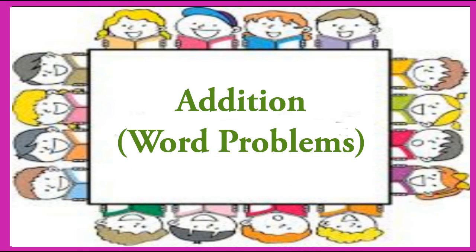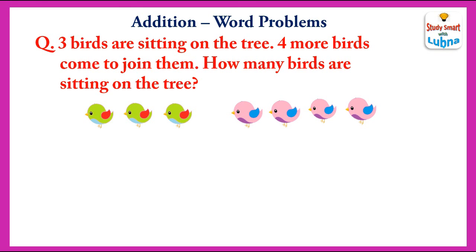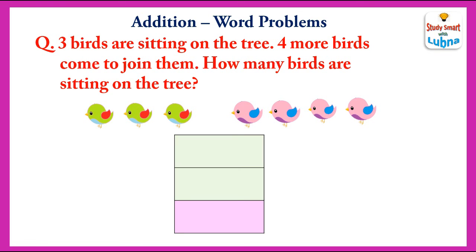Welcome students. Today we are going to do some addition word problems. Problem number one: three birds are sitting on the tree, four more birds come to join them. How many birds are sitting on the tree? In this problem you have to find the total number of birds. First there were three birds sitting on the tree, then four more birds come to join them. We will add three plus four, which equals seven. So there are total seven birds sitting on the tree.